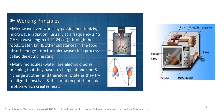The microwave oven works by passing non-ionizing microwave radiation, usually at a frequency of 3.55 GHz, to the food. Water, fats, and other substances in the food absorb the energy from the microwaves in a process called dielectric heating.